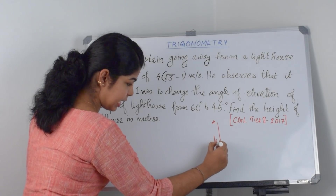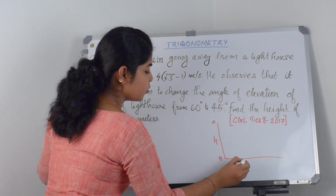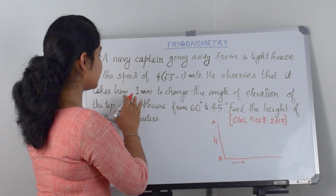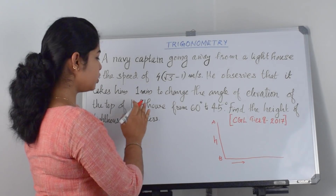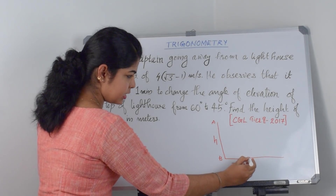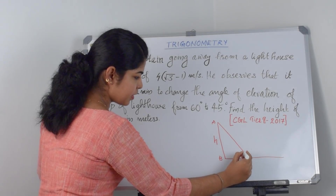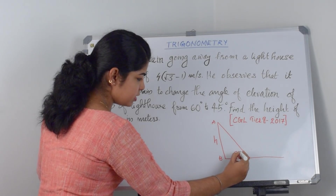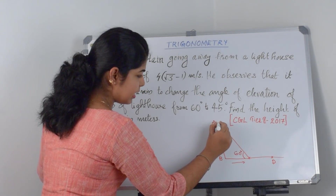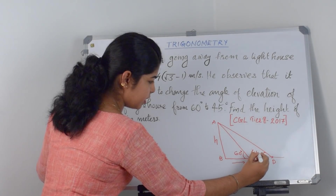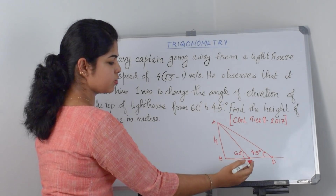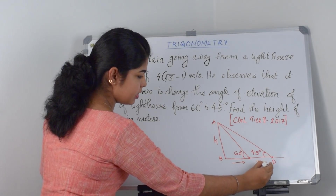Taking the height as h. The navy captain is moving away from the lighthouse, moving in this direction. Initially he was at a point C, and at that point the angle of elevation of the tower was 60 degrees. Then he moved to another point D, and at that point the angle of elevation is 45 degrees. It took 1 minute to change the angle of elevation, meaning it took 1 minute to travel the distance CD.